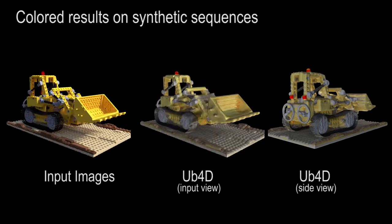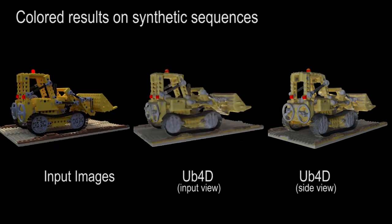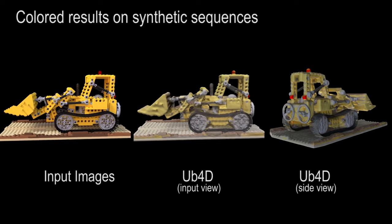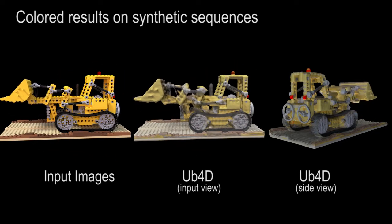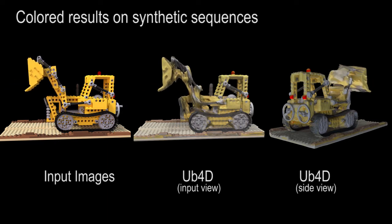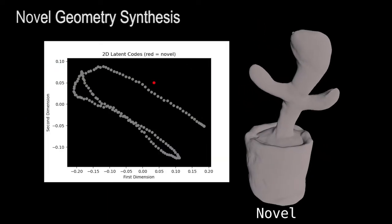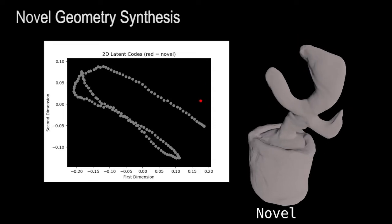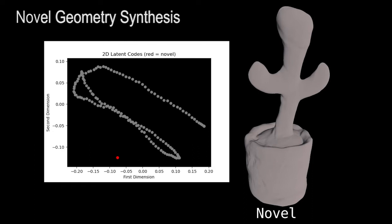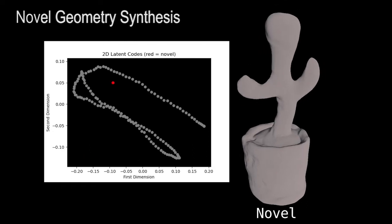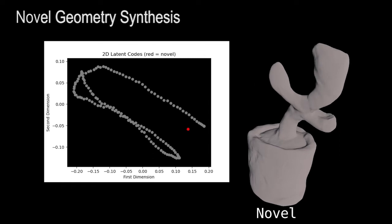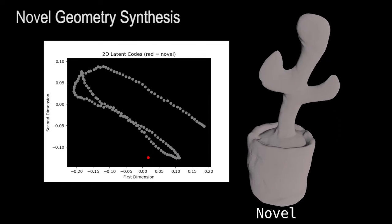Finally, we show the colored result for the LEGO sequence. Note that colors as well as geometry look plausible, even in the highly ill-posed monocular problem. We also investigate the application of geometry synthesis by providing novel latent codes to our bending network. Note the plausibility of the synthesized geometry even when the provided latent code exceeds the convex hull of observed states.